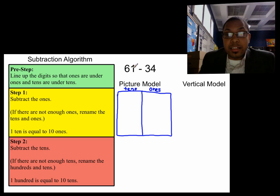So we're going to draw six tens, one one. Let's draw six tens. One, two, three, four, five, six tens. Notice how six is five and one. And then we're going to draw one one. Now we have done the pre-step for the picture model.